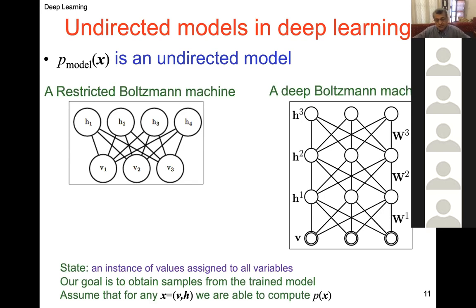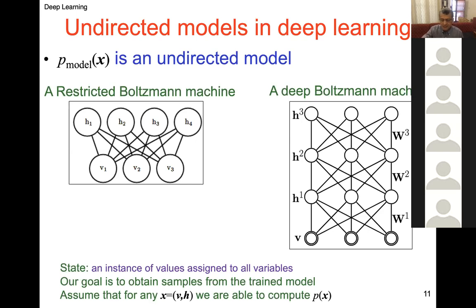The partition function Z is another whole chapter in deep learning — the next chapter after Monte Carlo sampling, called 'confronting the partition function.' There we see: if Z is so difficult, what are you going to do? Right now we'll assume Z is manageable, so we are able to compute p(x). In that chapter we define the contrastive divergence algorithm that Geoffrey Hinton defined for the restricted Boltzmann machine. For now we'll assume we can compute p(x).